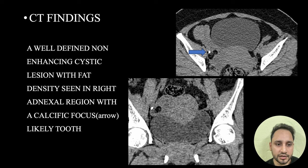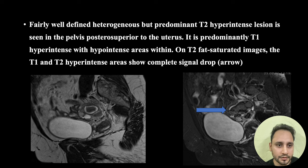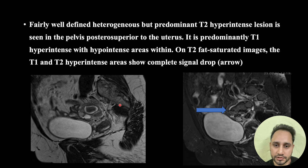CT findings: a well-defined non-enhancing cystic lesion with fat density was seen in the right adnexal region with a calcific focus likely representing a tooth. On MRI, a fairly well-defined heterogeneous but predominantly T2 hyperintense lesion is seen in the pelvis, posterior-superior to the uterus. It is predominantly T1 hyperintense with hypointense areas within. On T2 fat-saturated images, the T1 and T2 hyperintense areas show complete signal drop.